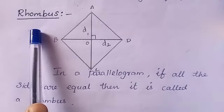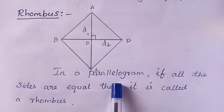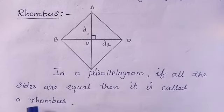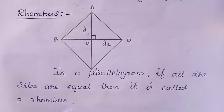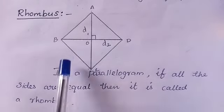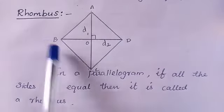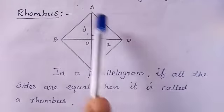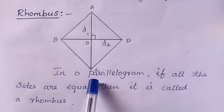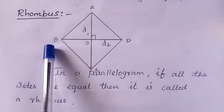Next, rhombus. Definition: in a parallelogram, if all the sides are equal, then it is called a rhombus. In shape ABCD, all sides are equal and opposite sides are parallel.